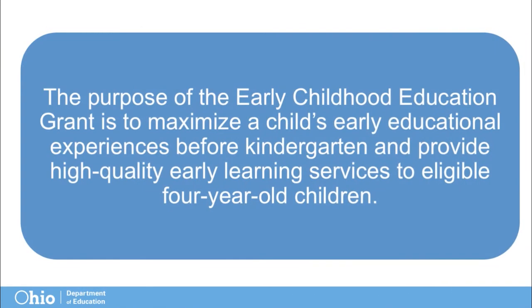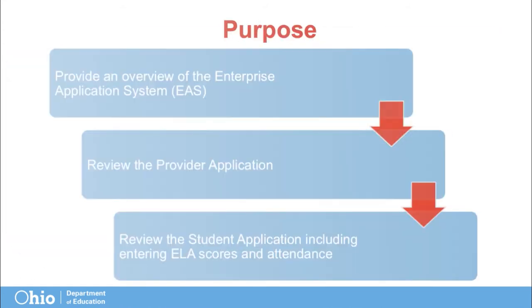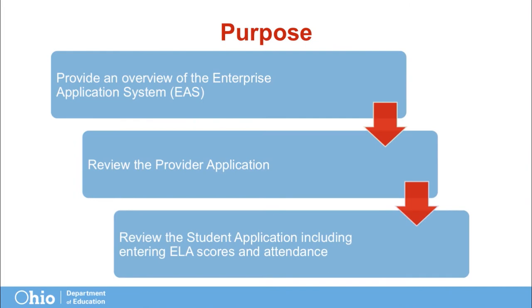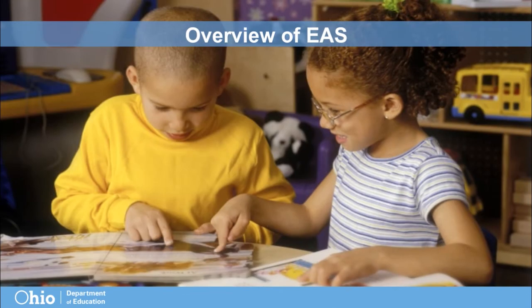The purpose of the Early Childhood Education Grant is to maximize a child's early educational experiences before kindergarten and provide high-quality early learning services to eligible 4-year-old children. Today we will be concentrating on the EAS student applications, including student-level reporting requirements for the early learning assessment and attendance. Programs are required to report teacher qualifications, student enrollment, monthly student attendance, fall and spring early learning assessment scores, disability category, and demographic data. The Enterprise Application System, also called EAS, is the software program used by some programs to report this information.